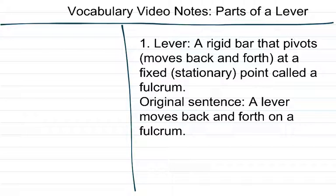For number one, write lever. So a lever is a rigid bar that pivots or moves back and forth at a fixed, which means like a stationary point, called a fulcrum. The original sentence is there, a lever moves back and forth on a fulcrum. So make sure you have your own original sentences, that's the only one I'm going to give you.